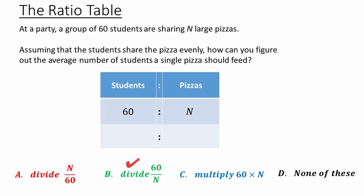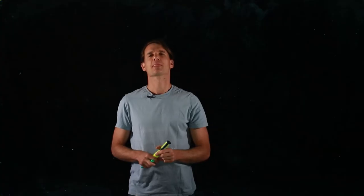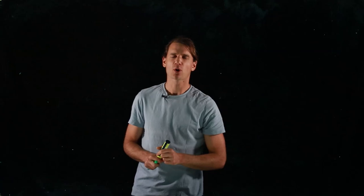The answer you were looking for was: divide 60 by n. But as always, it's not the answer but the method that is more important. We wanted to find the number of students for one pizza. On the right-hand side we divided by n, and on the left-hand side we also divided by n, to get 60 over n students for one pizza. Let's try another, slightly more complicated example.